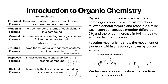Organic compounds are often part of a homologous series in which all members follow a general formula and react in a similar way. Each consecutive member differs by CH2 and there is an increase in boiling points as chain length increases. Reaction mechanisms show the movement of electrons within a reaction shown by curved arrows — you'll see a lot of these reaction mechanisms from now on.